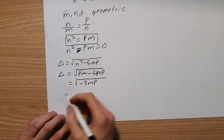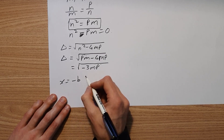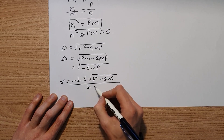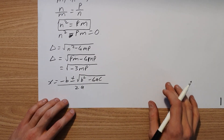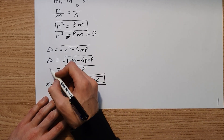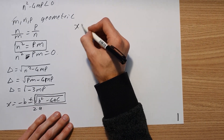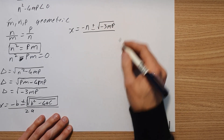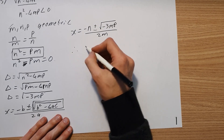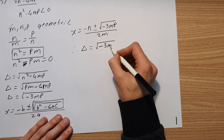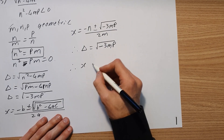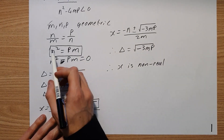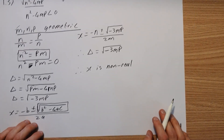Because this is negative, in the quadratic formula x equals negative n plus or minus delta, which is the square root of negative 3mp, all over 2m. Therefore, because delta equals the square root of a negative number, and because m and p are positive real numbers, we can conclude that x is non-real. That's how we go about doing this question. If you're finishing around the 20-minute mark, you're on track for your exams.